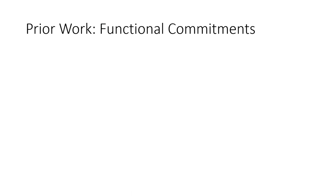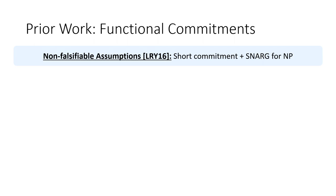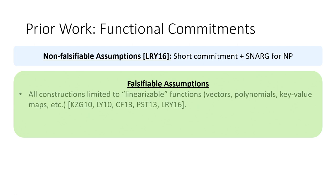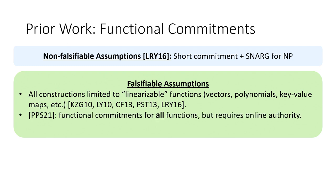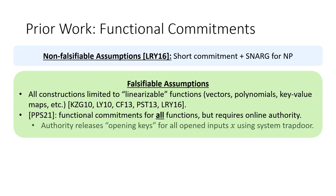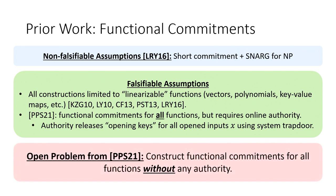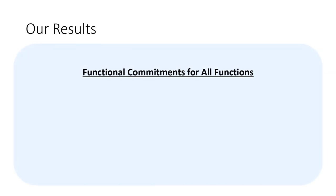What was known before this work? With non-falsifiable assumptions you can build functional commitments generically from a short commitment and a SNARK for NP. But with only falsifiable assumptions, all prior constructions were limited to linearizable functions like vectors and polynomials. In 2021, Peikert, Pepin, and Sharp constructed functional commitments for all functions, but required an online authority that releases opening keys for all opened inputs — not a natural security model. The open problem: can we construct functional commitments for all functions without any online authority? This is the result of our work.